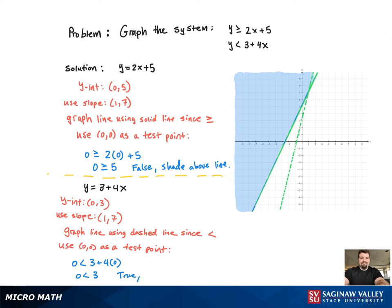And since it's true, that means we're going to shade the region that has the point (0, 0) on it, which is below the line, or to the right of the line.